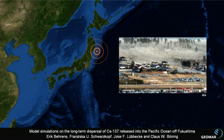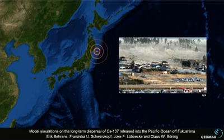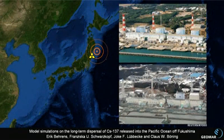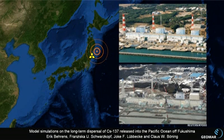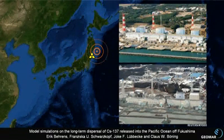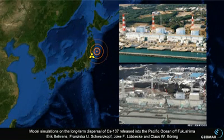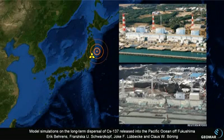Our study deals with one of the consequences of a disastrous earthquake and subsequent tsunami that hit Japan in March 2011. Caused by the explosions and meltdowns in the Fukushima Daiichi nuclear power plants, large amounts of radioactive material, including long-living isotopes such as cesium-137, were released into the environment. Contaminated waters entered the Pacific Ocean by atmospheric deposition and direct discharge of coolant in the weeks after the catastrophe.